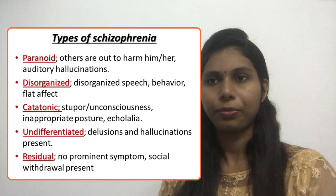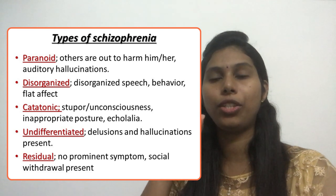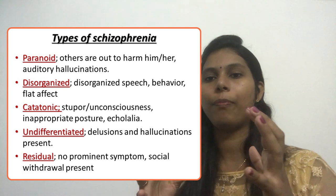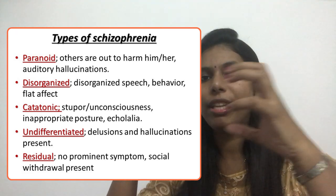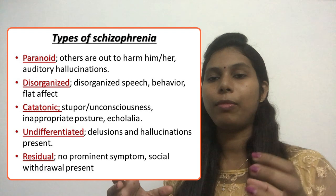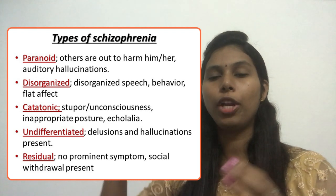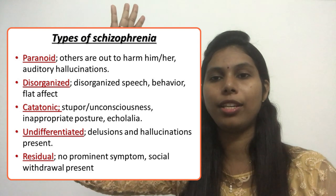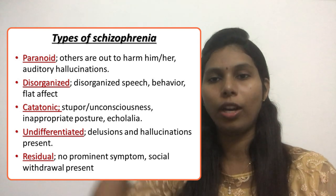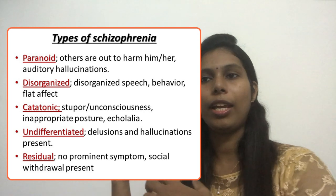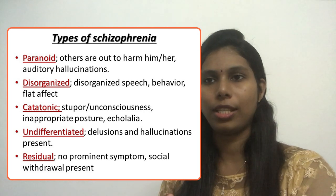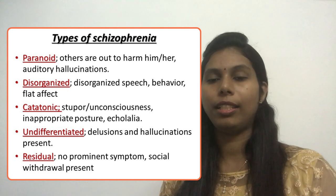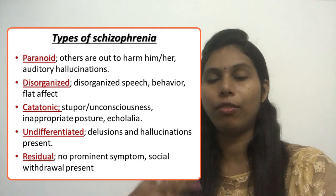Then catatonic schizophrenia — catatonic means like a very frozen or fixed manner. The client's body movement is fixed in a particular position; they might keep their hand in the same position for a long time. Some clients have stupor or unconsciousness, and some have echolalia — that is, the client is repeating the words that the nurse or healthcare provider says.